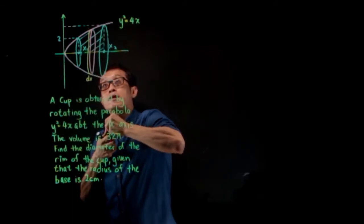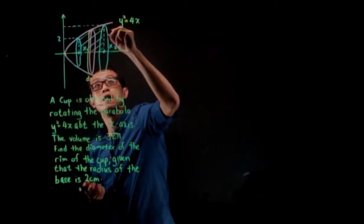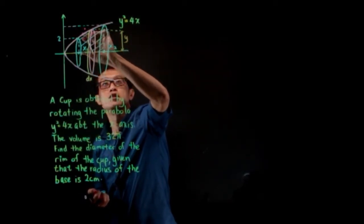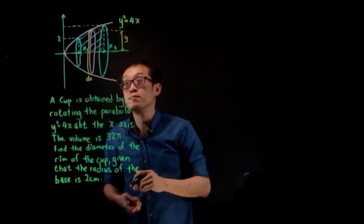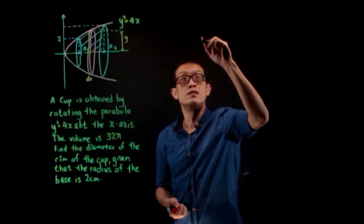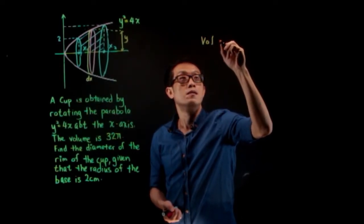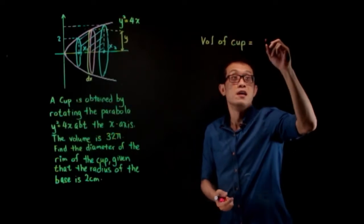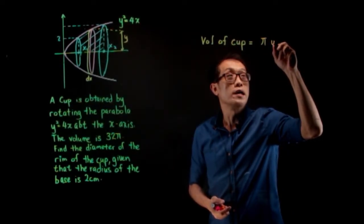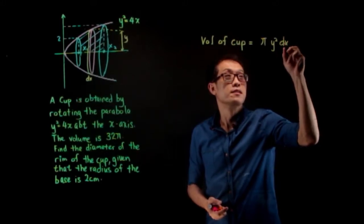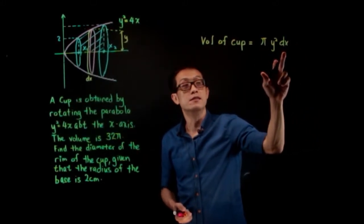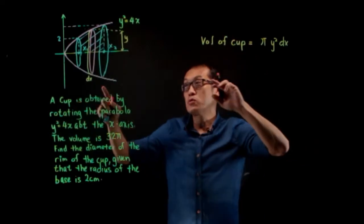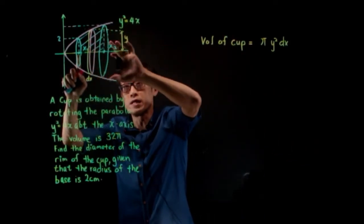This height here is y. y changes as x changes. Now, take it as a disk — the volume of the disk is πy²dx. This is πr²h where h is dx and r² is y².